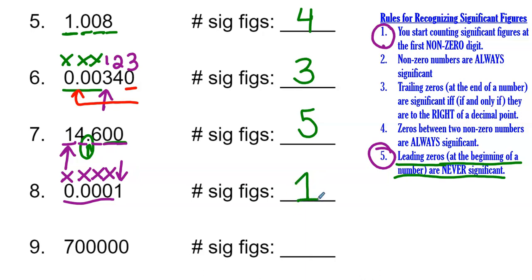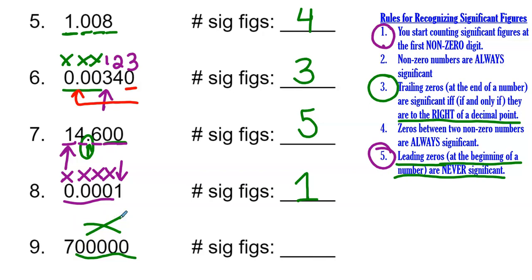Number nine has a whole bunch of trailing zeros. Applying rule three, trailing zeros are only significant if they are to the right of a decimal point. There is no decimal point in this number, so none of those zeros are significant. Only the non-zero number — the seven — is significant. So number nine has just one significant figure.